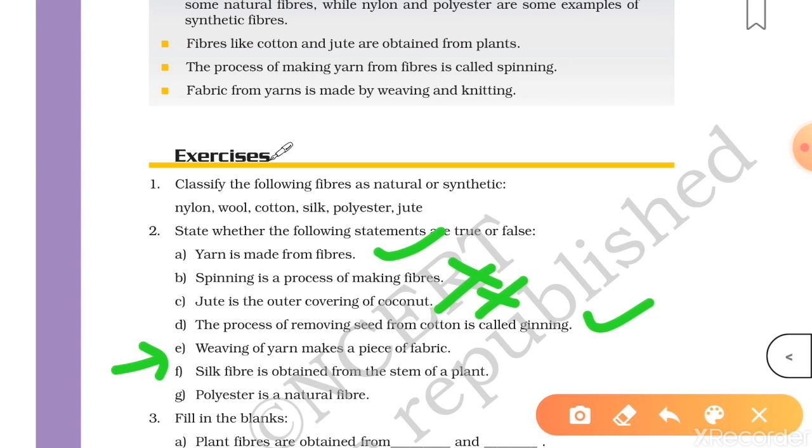Silk fiber is obtained from the stem of plant. This is also false because silk is obtained from silk worm.